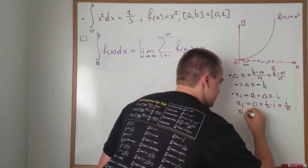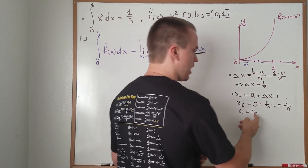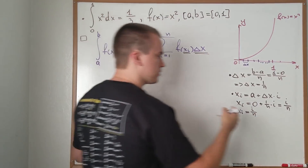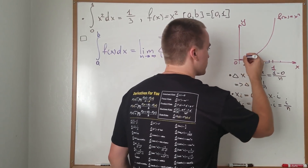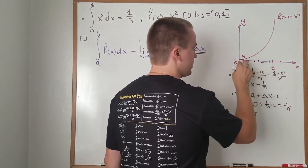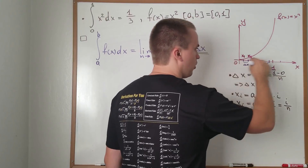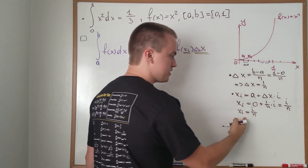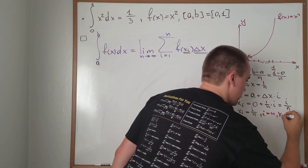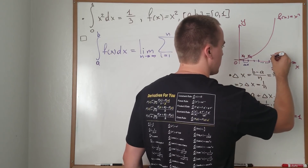So xᵢ equals i/n, and i goes from 1 to n. When i equals 1, we get x₁ = 1/n. When i equals 2, we get x₂ = 2/n — we've added Δx twice. And when i equals n, we get xₙ = n/n = 1, which is our last point.